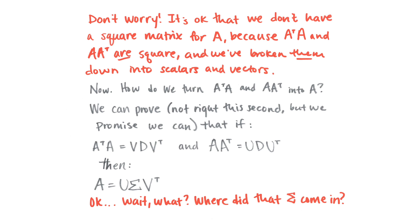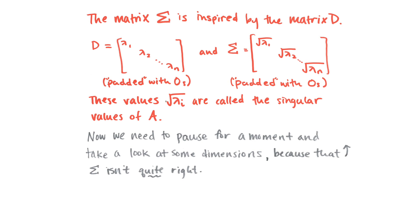And there's a proof for this, which again we're going to leave for another time, but we promise we can do it. That if you have A transpose A equals V D V transpose, and you have A A transpose equals U D U transpose, then you can write your original matrix A as U sigma V transpose. Now where did this sigma come in here? The matrix sigma is inspired by the matrix D. So we had D before with the eigenvalues all along the diagonal and zeros all around them. And now we have sigma, and it has the square root of those same eigenvalues along the diagonal and zeros all around them. And these square root of lambda I, which is all the little lambdas, are called the singular values of A, where lambda sub I is the eigenvalue of A transpose A or A A transpose, which are actually the same. And you might have noticed this when you were going through the orthonormal diagonalization of those matrices.